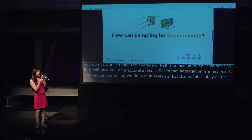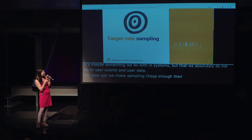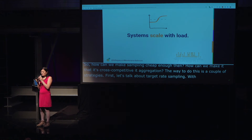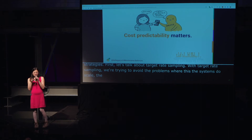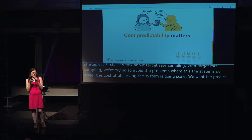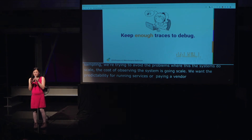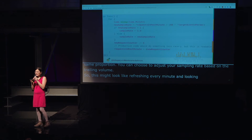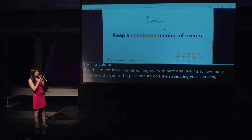How can we make sampling cheap enough to be cost-competitive with aggregation? First, let's talk about target rate sampling. With target rate sampling we're trying to avoid the problem where, as system load scales, the cost of observing the system scales too. We want cost predictability — we want the cost to remain constant and our retention periods to remain constant. If the volume of queries going into your service goes up, you can adjust your sampling rate based off the trailing volume. This might look like refreshing every minute, looking at how many queries you got in the past minute, and then adjusting your sampling rate for the following minute. That enables us to keep a consistent number of events over time.